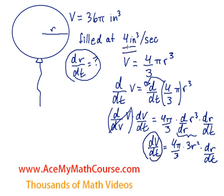We have dV/dt, which is just 4 cubic inches per second, but we don't have r. So we can easily find out what r is, can't we? Yes we can. What are we going to do? We're going to plug in 36π in for the volume and solve for r. So here we have 36π equals 4/3 πr³.